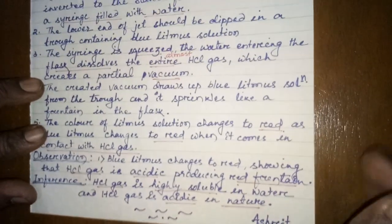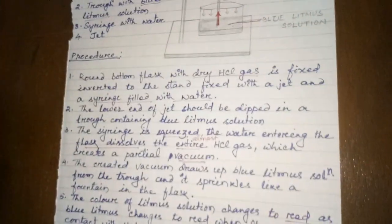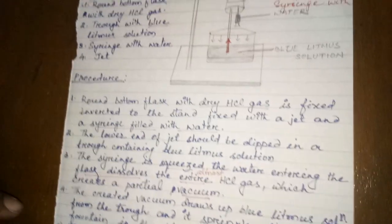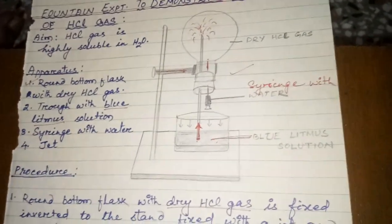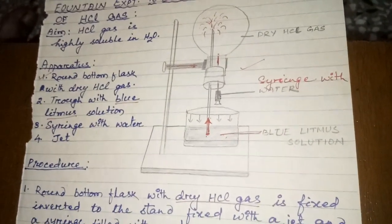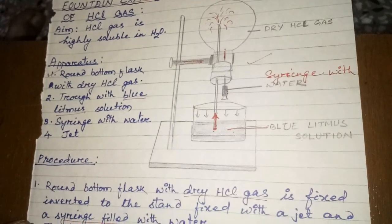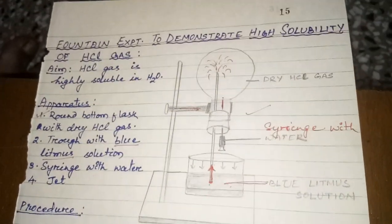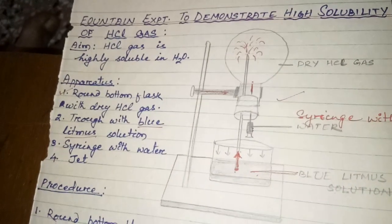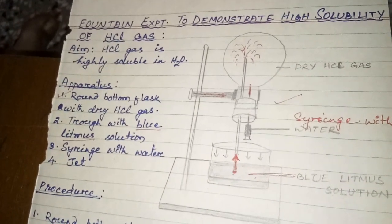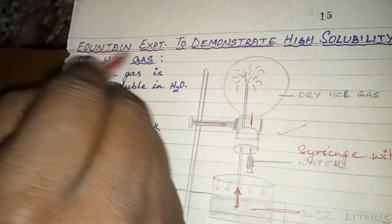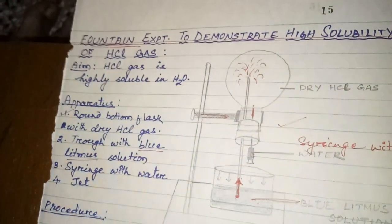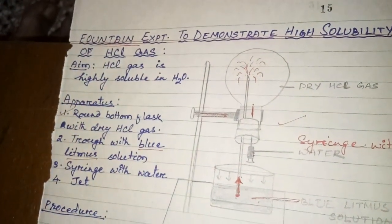This is all about the two simple experiments. You will get some questions based on the experiments — for example, what is the experiment conducted for the solubility of HCl gas? That is the fountain experiment. The fountain experiment proves two things: HCl gas is highly soluble in water, and HCl gas is acidic in nature. Thank you.